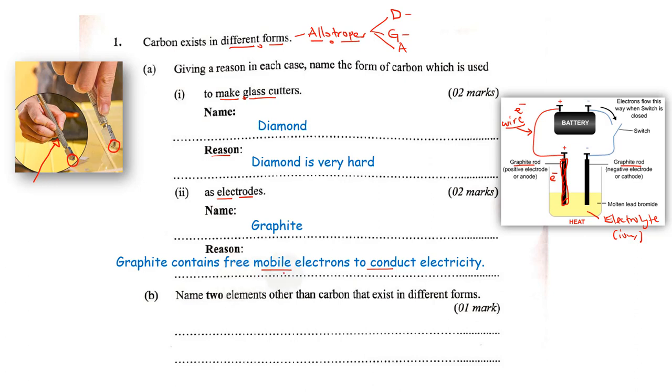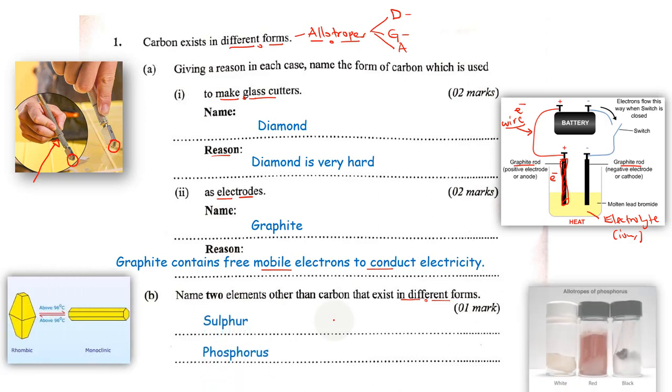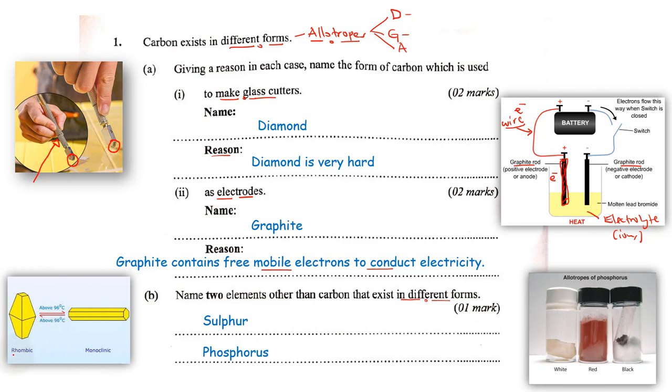Lastly, part B: Name two elements other than carbon that exist in different forms. So you want to know more elements that can actually have allotropes. There are very many elements that do have allotropes, but we shall try to look at the common ones. We shall look at sulfur and phosphorus. Sulfur has two common allotropes: rhombic sulfur and monoclinic sulfur. Feel free to check out the differences between these two forms of sulfur in terms of appearance and stability at room temperatures.